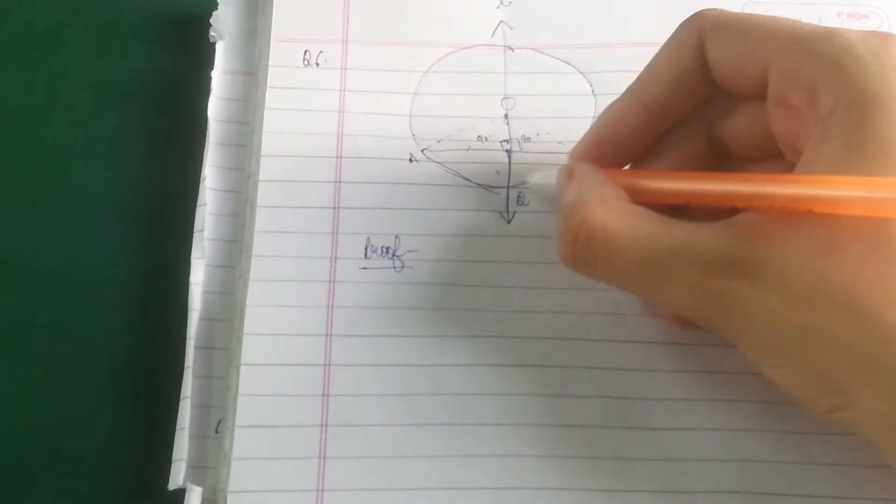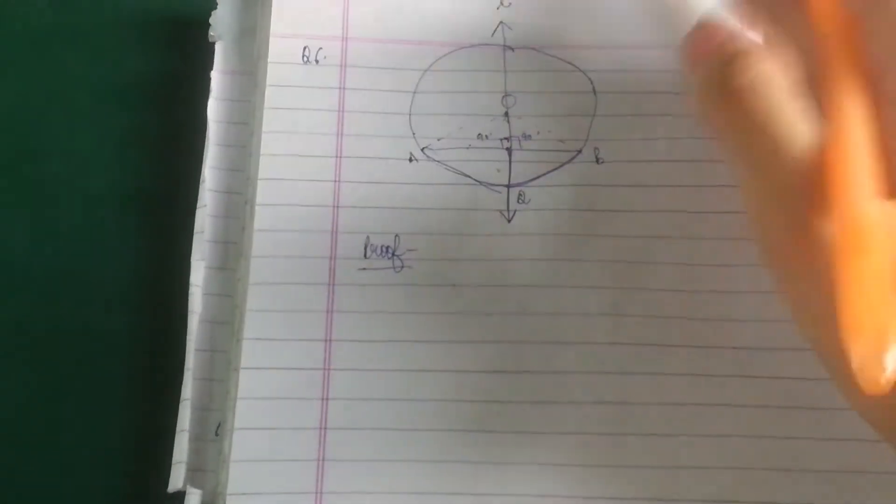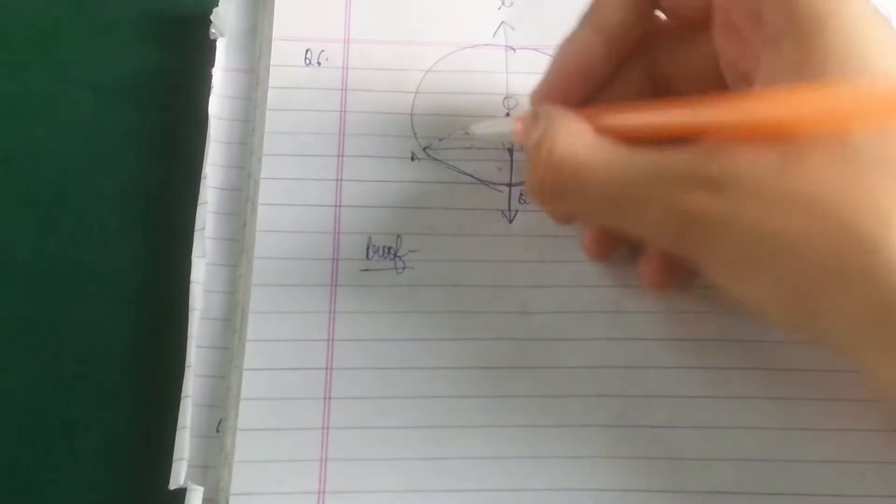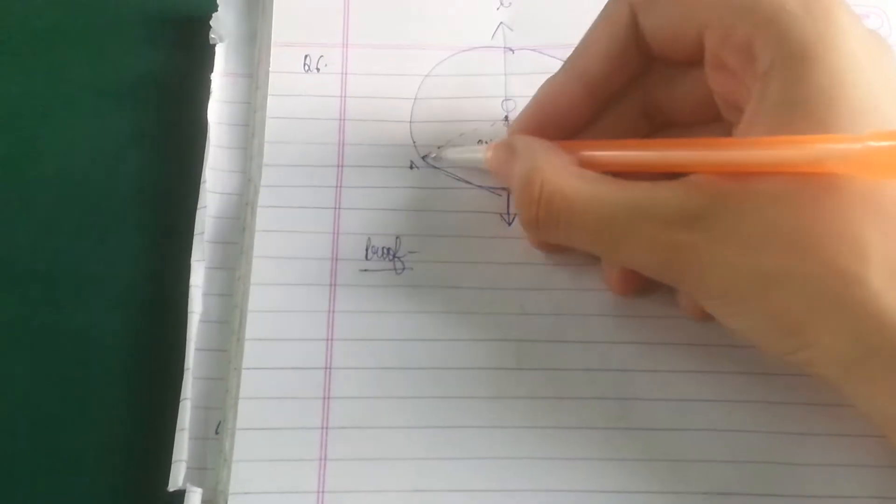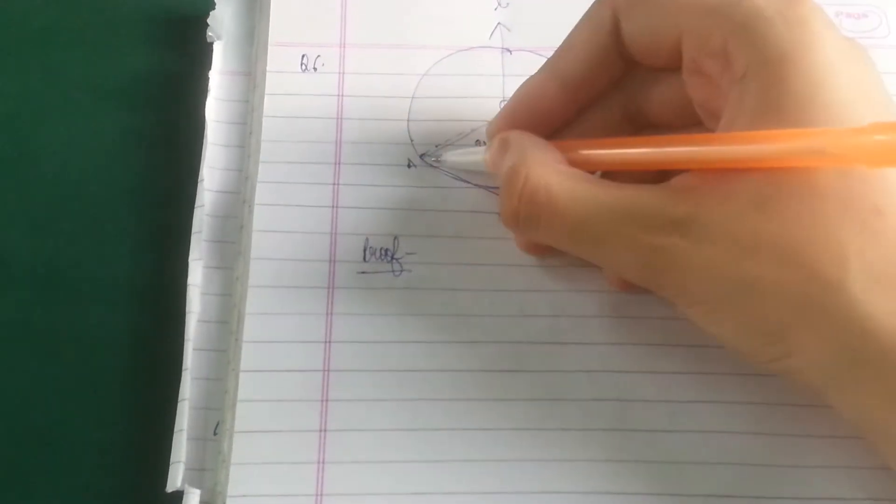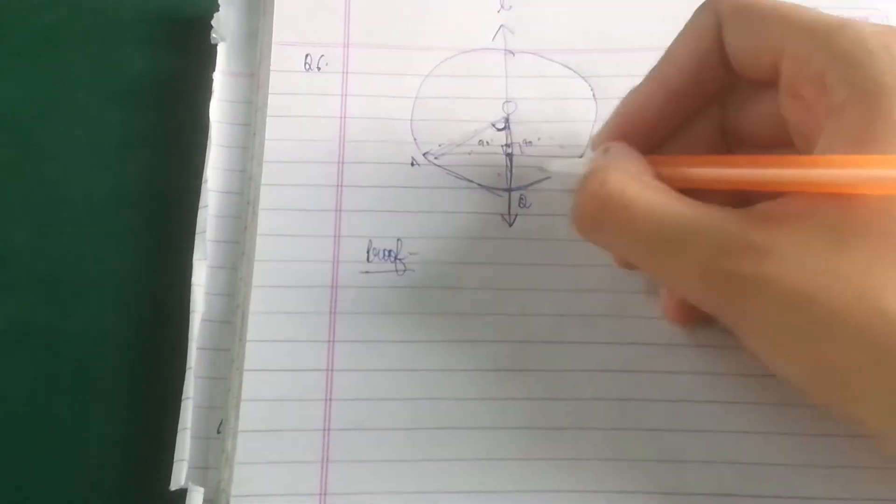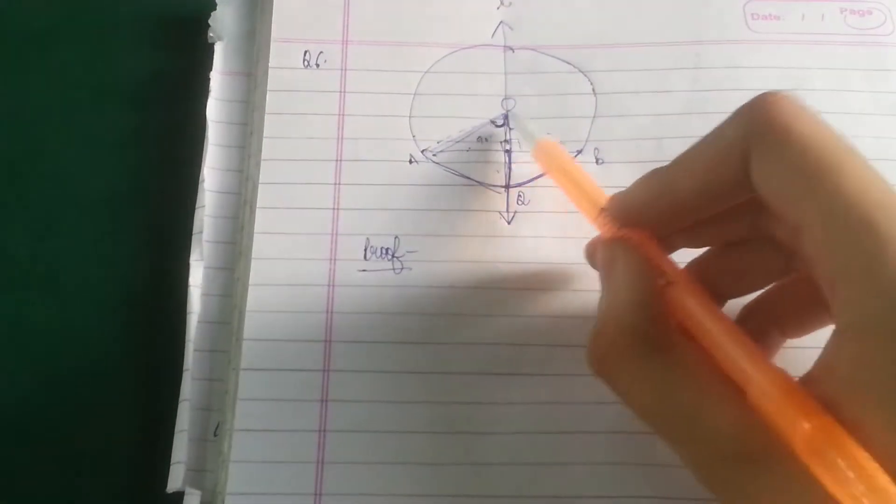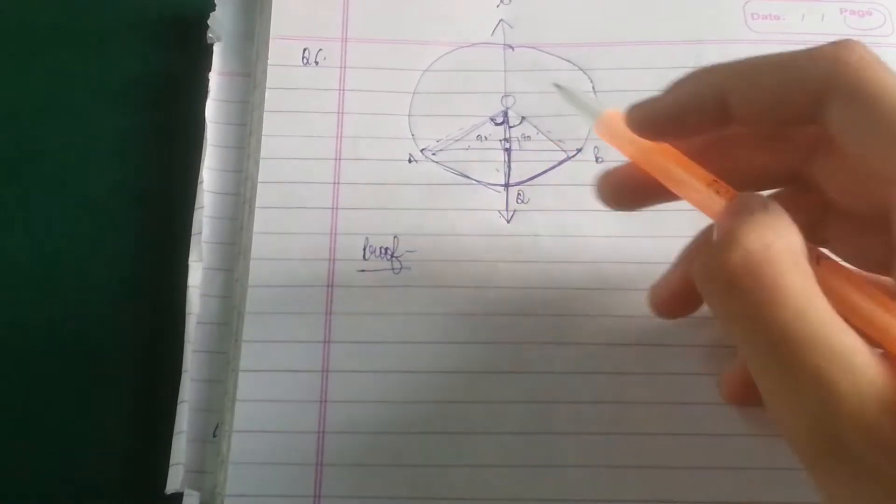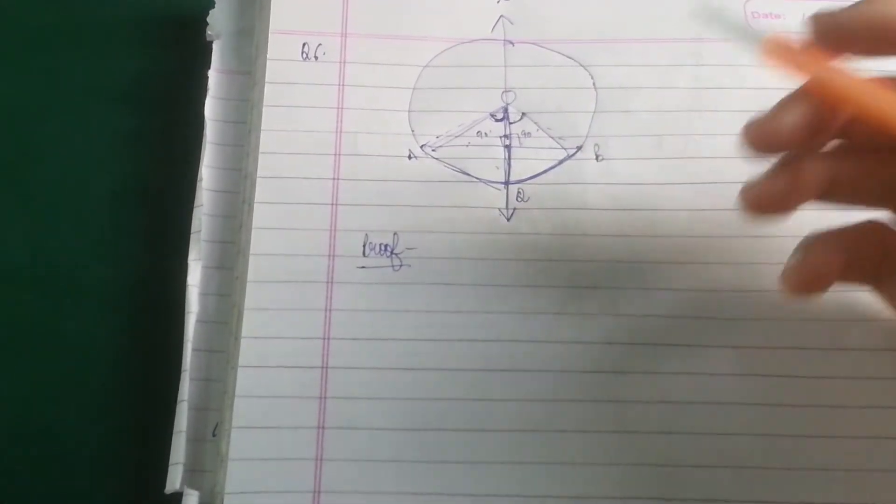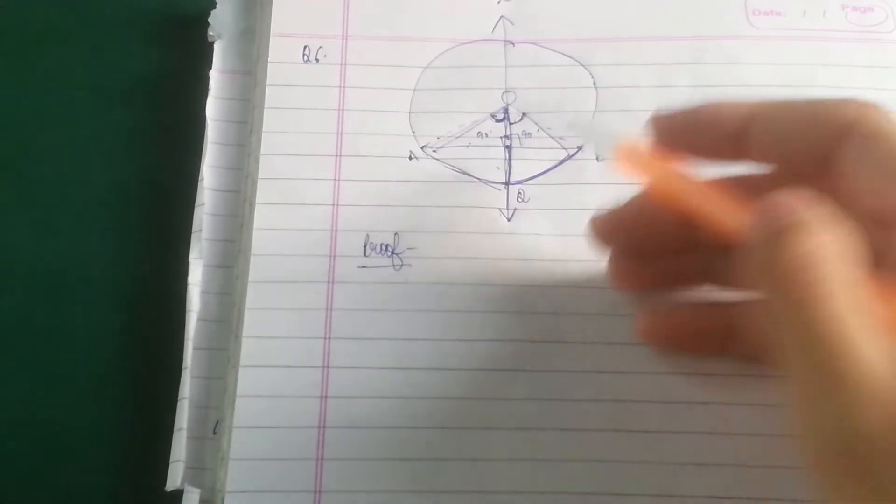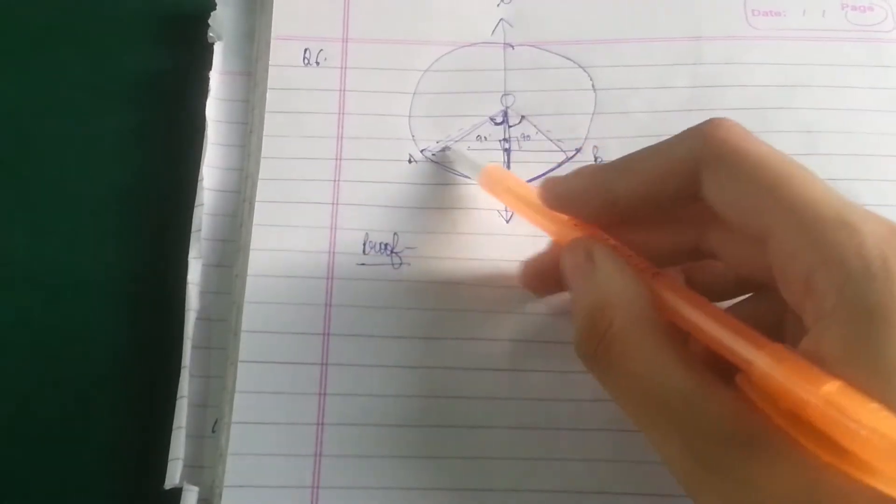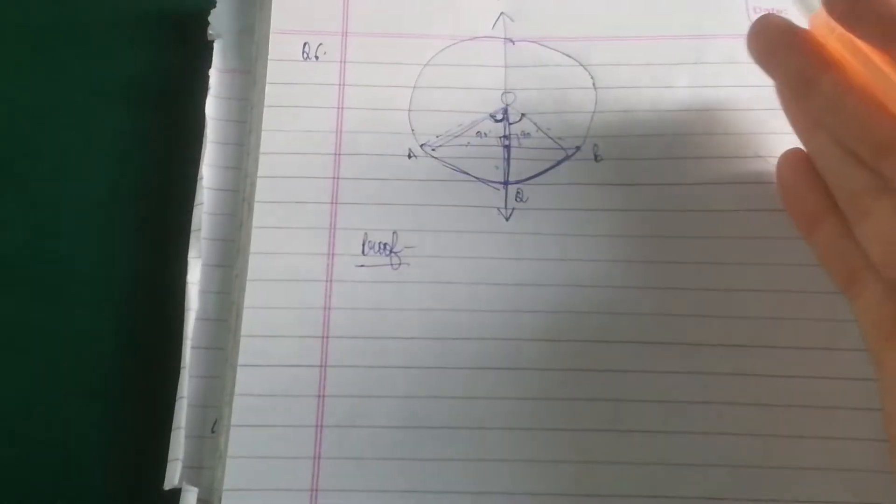We have to prove that this arc is equal to this arc. In order to prove this, this arc is subtending an angle and this arc is subtending this angle. So it means if we prove these two angles as equal, then the arcs will be automatically proved as equal. So in order to prove these two angles as equal, we will take these two triangles and prove them congruent.